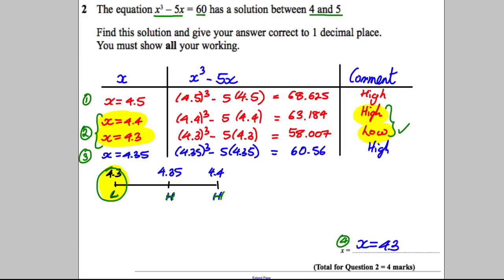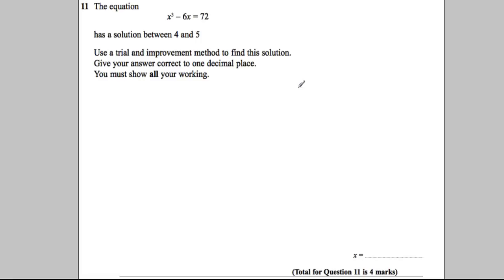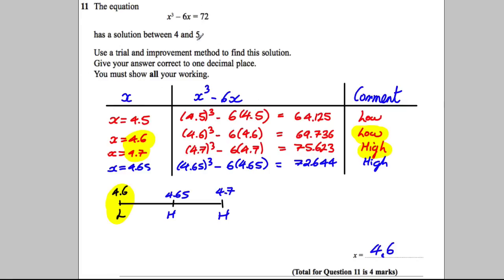Next one, pause the video. Have a go. I'll show you the answer. The answer to this one. Here's my table. The solution between 4 and 5. I tried 4.5. It was too low. So I went up to 4.6. It was again too low. So that was my first mark, my first try. Then I went up to 4.7. It was too high. Having found a consecutive pair where one's low, one's high beside each other. That was my second mark. I tried halfway between, which is 4.65. That was too high. Drew my picture. 4.6 too low. 4.65 too high. 4.7 too high. 4.6 was there for my answer.